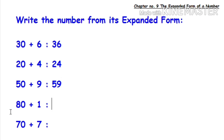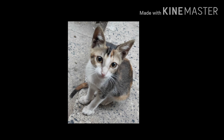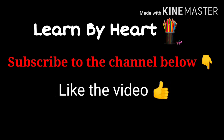Next: 80 plus 1. Radha — very good — 81. Now the last one is 70 plus 7. What is the number? 77. All of you got it children? Very good. 90 plus 7 is 97. All of you got it children? And 90 plus 8 is 98. All of you got it children?